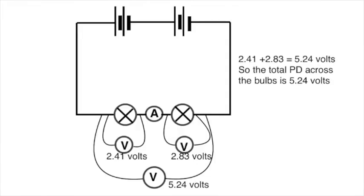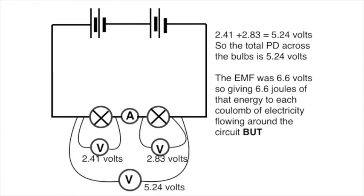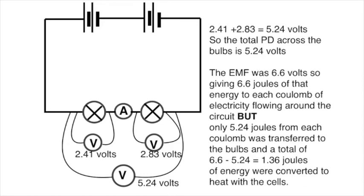So just to push the point home and restating it slightly differently. The potential difference across the bulbs was 5.24 volts. But the EMF of the cells was 6.6 volts. So 6.6 joules of energy were provided to each coulomb of electricity. Only 5.24 joules of energy were converted to heat and light in the bulbs. So 1.36 joules of energy were converted to heat in the cells.